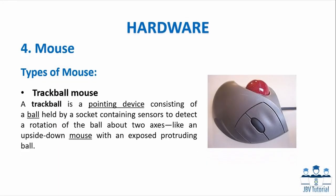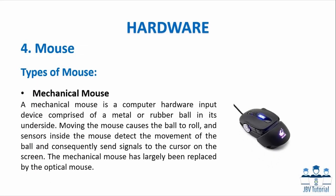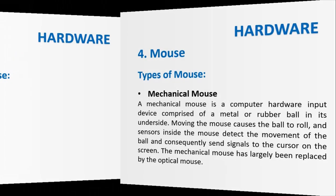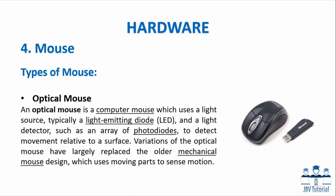Types of mouse: Trackball Mouse: A trackball is a pointing device consisting of a ball held by a socket containing sensors to detect rotation of the ball about two axes, like an upside-down mouse with an exposed protruding ball. Mechanical Mouse: It is comprised of a metal or rubber ball on its underside. Moving the mouse causes the ball to roll, and sensors inside detect the movement and send signals to the cursor on the screen. The mechanical mouse has largely been replaced by the optical mouse. Optical Mouse: It uses a light source, typically an LED, and a light detector, such as an array of photodiodes, to detect movement relative to a surface.